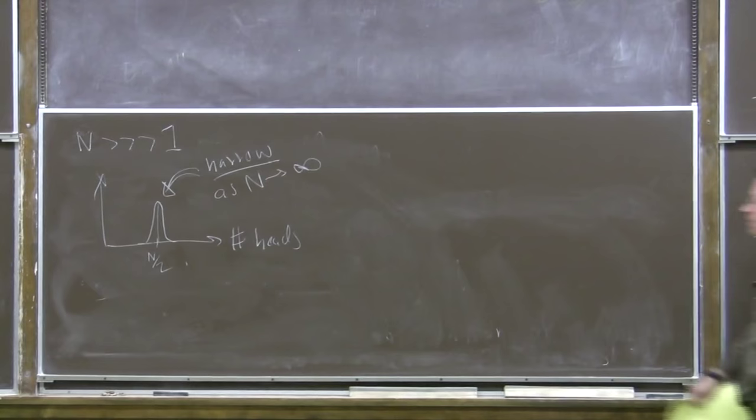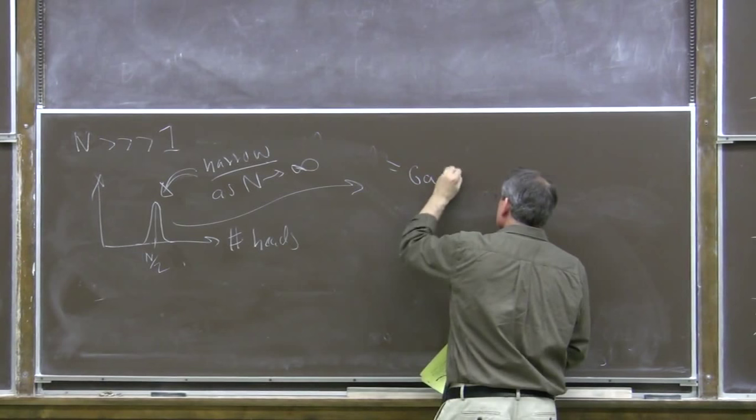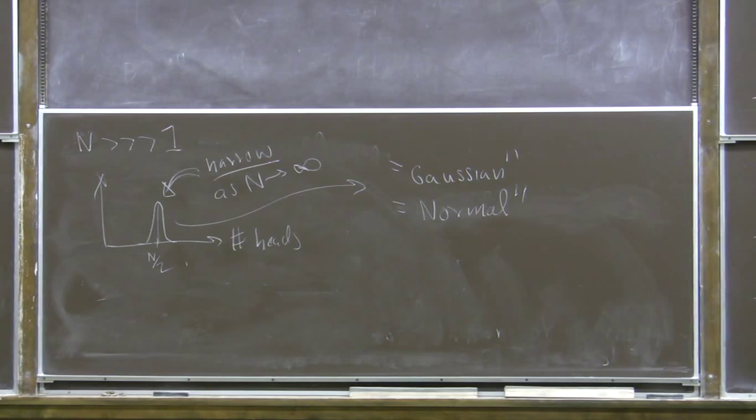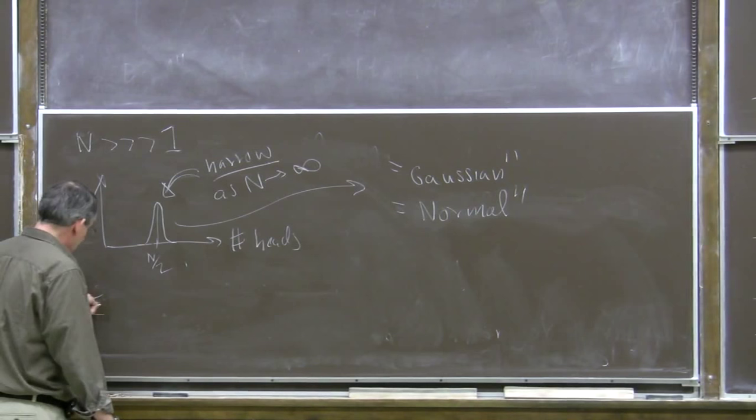It has a characteristic shape which we call a Gaussian, or a normal distribution. This is a special case of a rather general result called the central limit theorem.